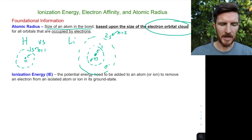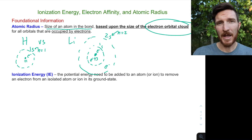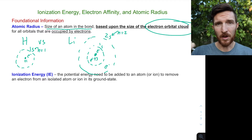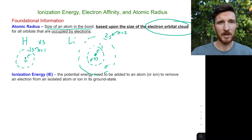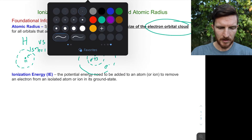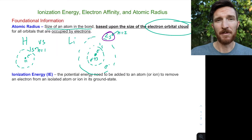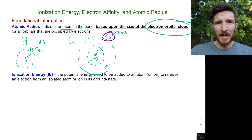These atoms are in the same group, so they all have one valence electron. The same would be true for sodium or potassium — as we go down group 1, our size gets larger simply because we are occupying a larger n-value shell.